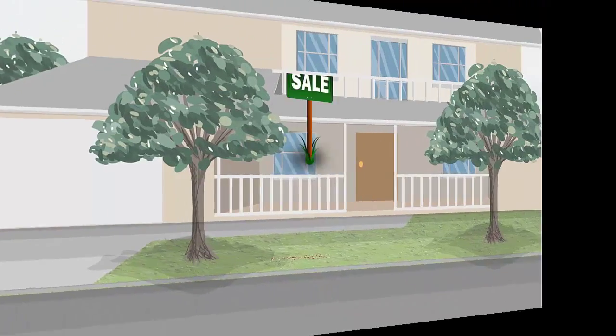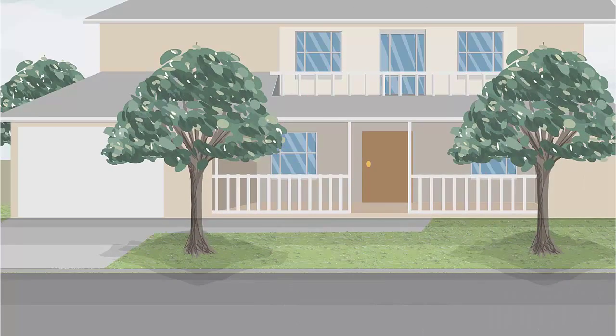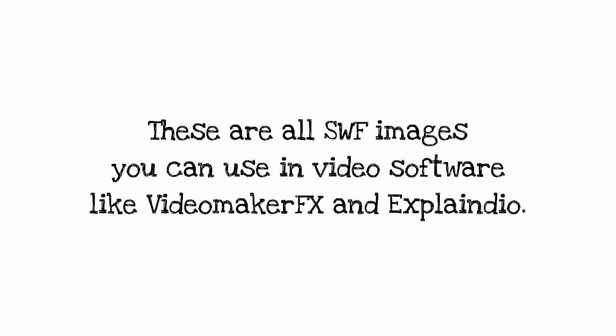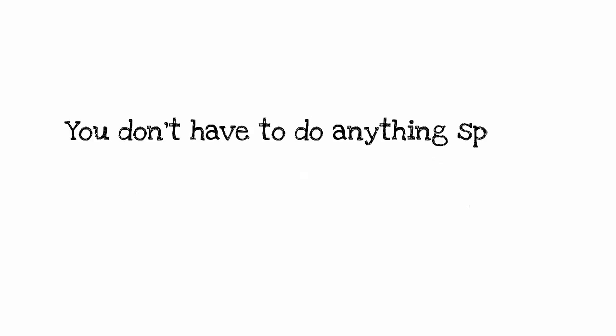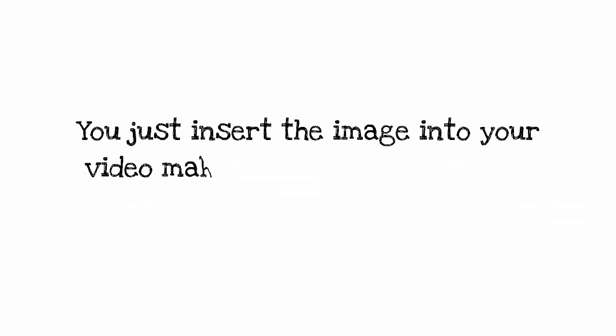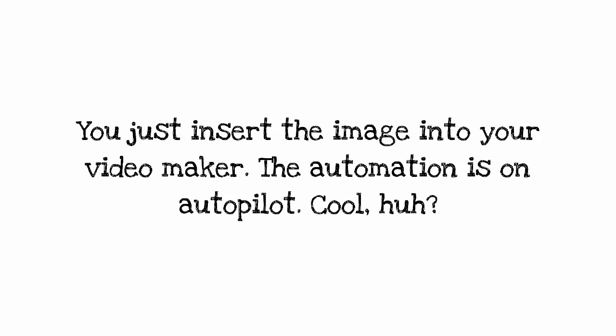Dig this. I'm building a real estate scene in Explainedio. The basic VidStickers package includes a set of animated signs that make the scene come alive. These are all SWF images — flash animation elements you can insert into video makers like Explainedio. You don't have to do anything special to make the images animate because the animation is built right in. You just insert the image into your video maker and the animations run on autopilot.